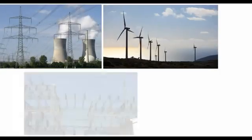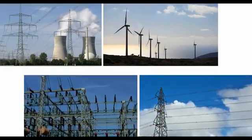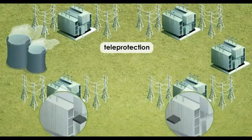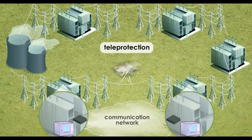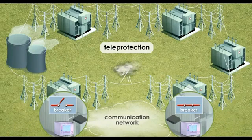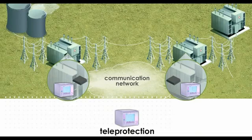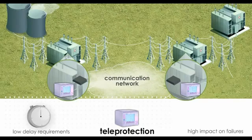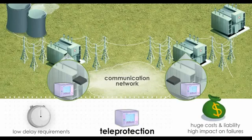An essential requirement for operating and maintaining a reliable, robust and safe electric grid is teleprotection. It involves relays that communicate with each other over a communication network to determine the presence of faults and trip the breakers to protect the grid and contain the impact of the fault to a localized region. Teleprotection is the most stringent application that can be transported over utility communication networks due to its very low delay requirements and the resulting impacts of a failure such as electricity outages or potential equipment damage, both generating huge costs and associated liability.